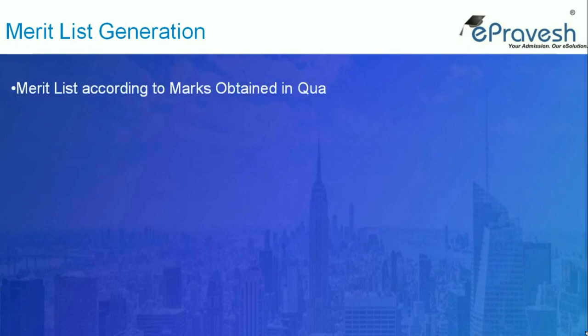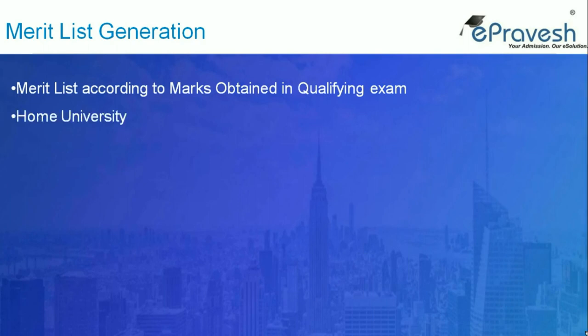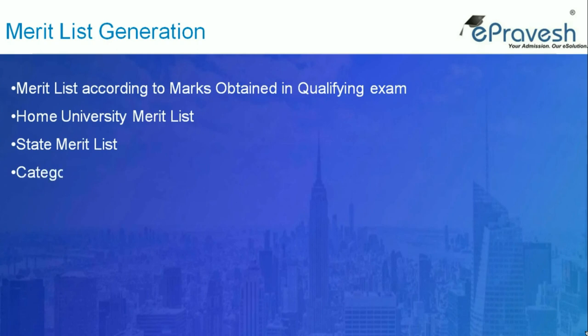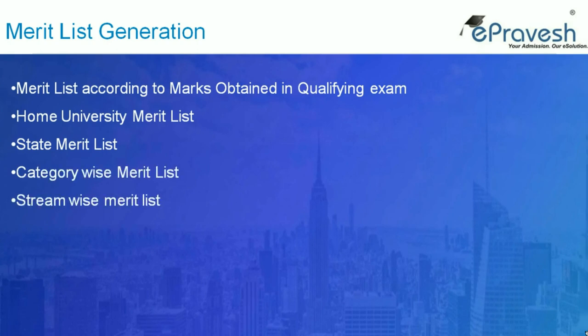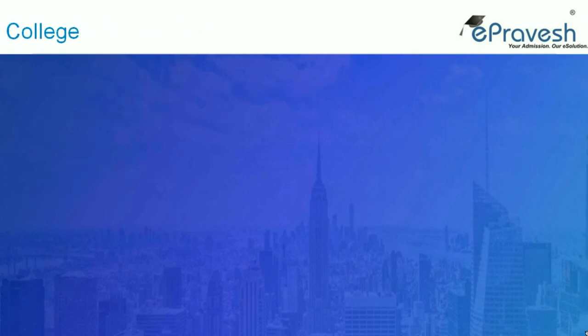Next is merit list generation according to government rules and regulations. The merit list is generated for valid applicants based on criteria defined for the admission process. There can be multiple merit lists according to university, category, and stream of the candidate.